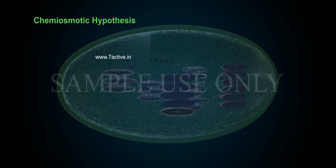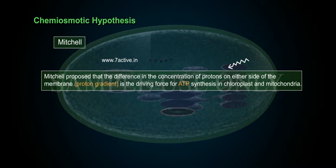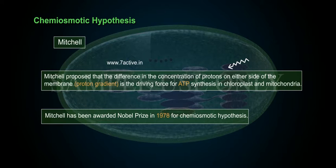Chemiosmotic Hypothesis: Mitchell proposed that the difference in the concentration of protons on either side of the membrane — the proton gradient — is the driving force for ATP synthesis in chloroplasts and mitochondria. Mitchell was awarded the Nobel Prize in 1978 for the chemiosmotic hypothesis.